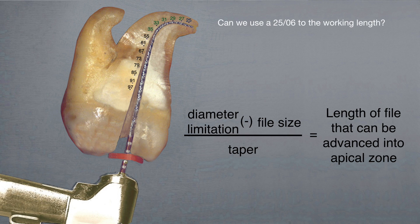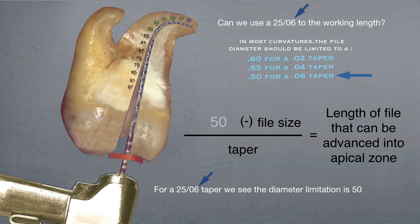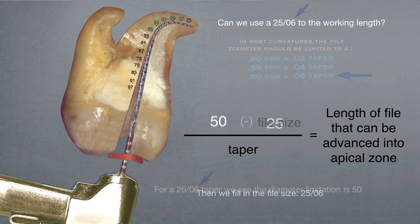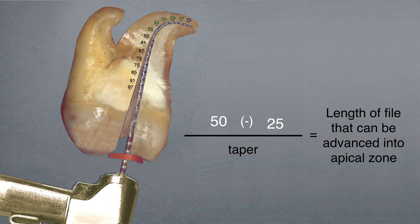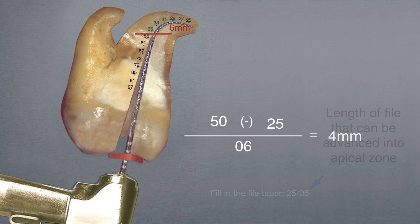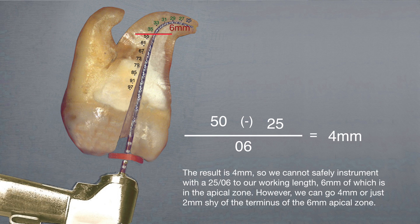So, what about a 2506? For the 2506 taper, you see the diameter limitation is 50. Of course, the size is 25, and the taper is an 06. So, 50 minus 25 divided by 6 equals 4 millimeters. So, we cannot safely instrument with a 2506 to our working length, 6 millimeters of which is in the apical zone. However, we can go 4 millimeters, which is just 2 millimeters shy of the terminus of the 6 millimeter apical zone.